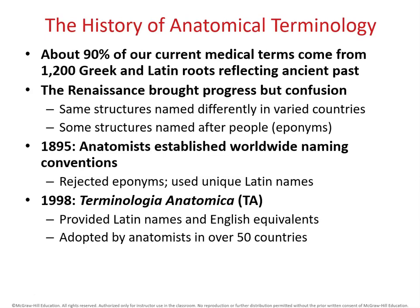This terminology during the Renaissance era did cause a lot of confusion. There wasn't a standardized naming practice from country to country, and some things were called by several different names. So there were two big efforts — one in 1895 and one in 1998 — to standardize the terminology used in biology and especially anatomy and physiology.